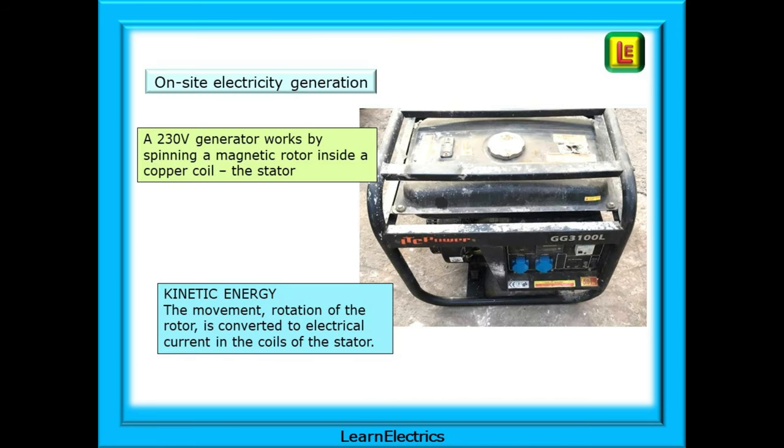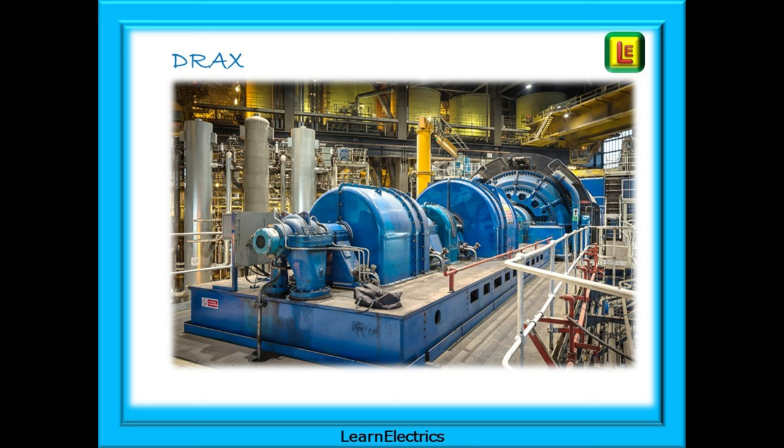Another example is an on-site generator. The coils are fixed in position, stationary, hence they are called the stator. When the petrol engine is fired up, the magnetic rotor between the coils will begin to rotate. The movement or rotation of the rotor is converted into electrical current in the fixed stationary coils. Now we can produce much more current than the record player needle, with 110 volts, 230 volts and 400 volts at several amps being typical. We can scale this up to power stations such as the Drax power station in North Yorkshire. At its heyday it could produce two and a half megawatts of electrical power. Movement in, electrical current out.